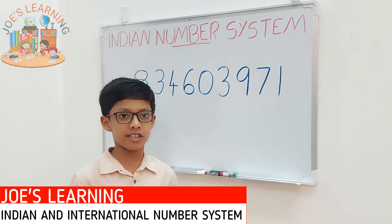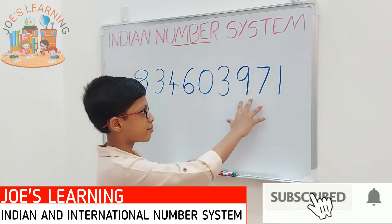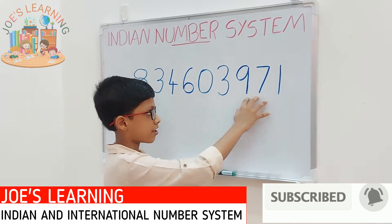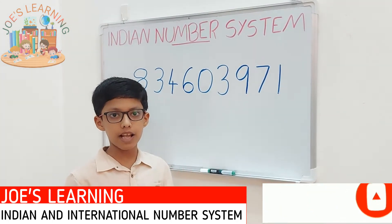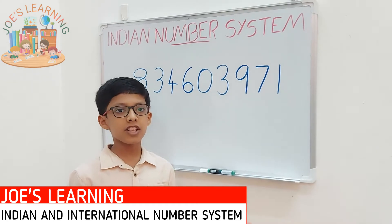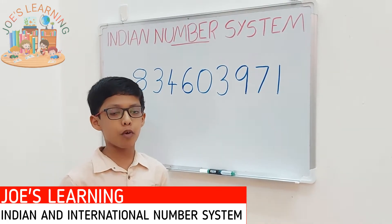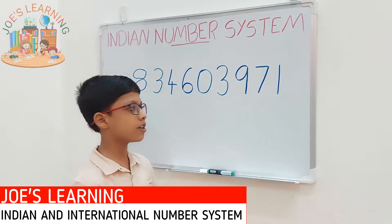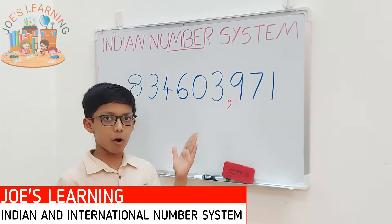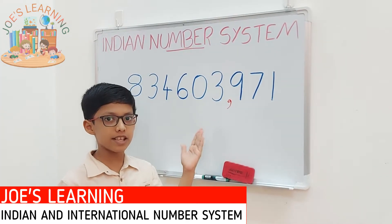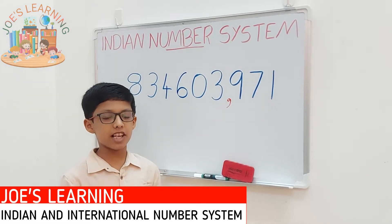The first period is the ones period. The ones period consists of three places: ones, tens, and hundreds. To separate the ones period from the rest of the number, we put a comma after it. Now let's move on to the next period, that is the thousands period.